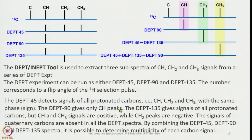DEPT-135 gives signals of all protonated carbons, but CH and CH3 signals are positive while CH2 is negative. The signals of quaternary carbons are absent in all DEPT spectra. By combining DEPT-45, DEPT-90, and DEPT-135 experiments, we can assign the multiplicity of each carbon and eventually arrive at the molecular structure rather easily. These experiments can be performed on any instrument available in your institute — it is a very nice learning process.